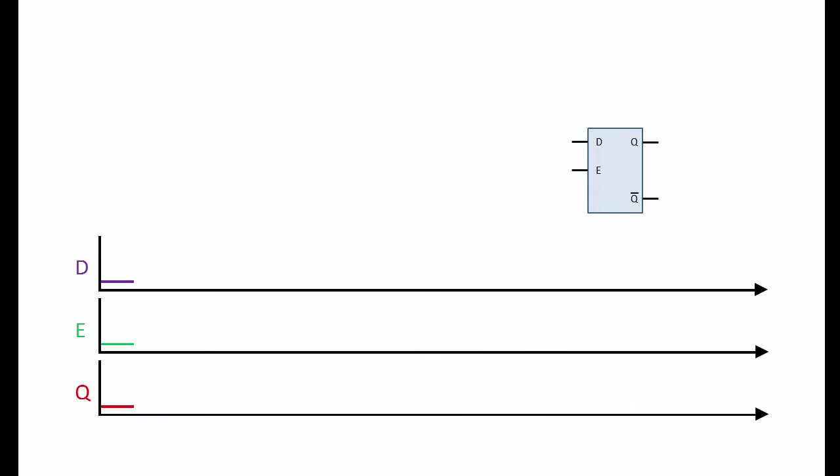Let's take a look at the operation of a clock-controlled D-Latch on a timing diagram. We're starting with D and Q both at zero, and E is at zero, so the D-Latch isn't enabled. E is connected to a clock, so this input is alternating between high and low. You can see here the typical square wave of a clock being applied at input E.